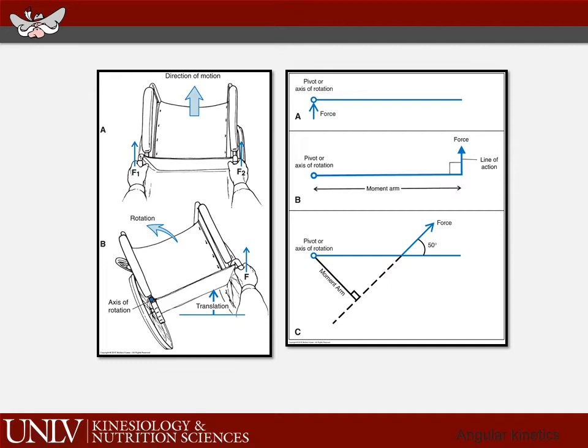If the force application is at a right angle to the pivot axis, the line of action of the force is that shortest distance — that moment arm. In case C, if I apply a force at some angle, say 50 degrees, to the arm, I have to extend the vector of where I apply the line of action (the blue vector) back out to create a shortest right-angle distance to the pivot or axis of rotation. That is the moment arm: the shortest perpendicular distance from a right angle to the line of action of the force.